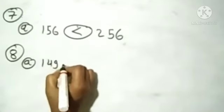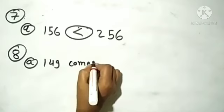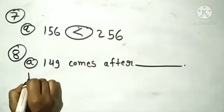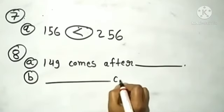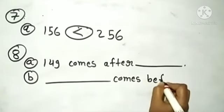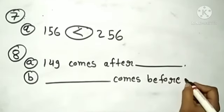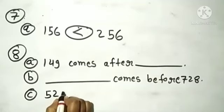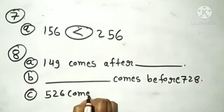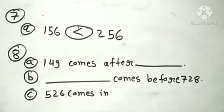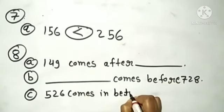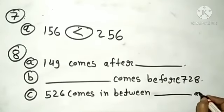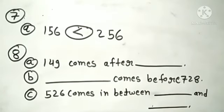First question: 149 comes after blank. Second question: blank comes before 729. And third question: 526 comes in between two numbers. इसे आप इसके बाद लिखेंगे।